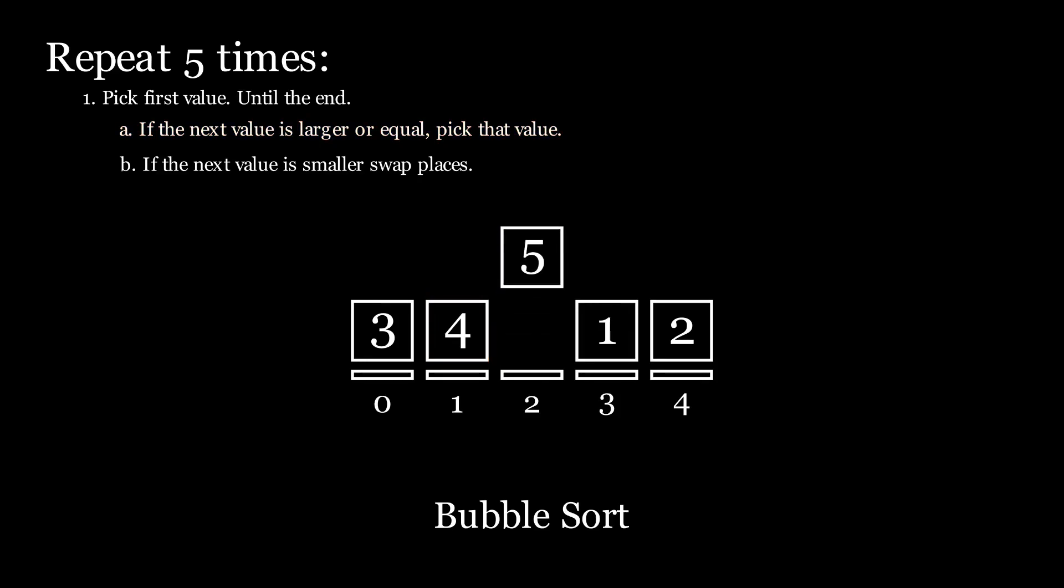Next we compare the 5 we just picked with the 1 which is next. 1 is smaller than 5, so we swap places. Then we compare 5 and 2 and we once again apply rule B because 2 is smaller than 5. So they swap places.